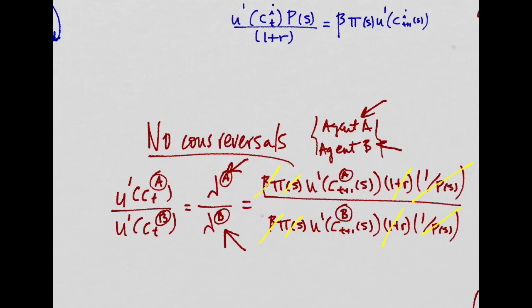This tells us that the ratio between the marginal utilities of two agents has to be constant over time. So, if for one period, Agent A has more consumption than Agent B, meaning his marginal utility is lower than the marginal utility of Agent B, then this ratio will be less than one. And this will hold for all T, and also for any state of the world.